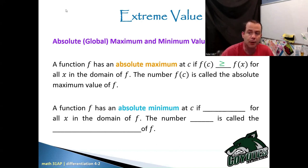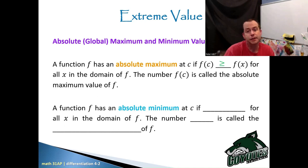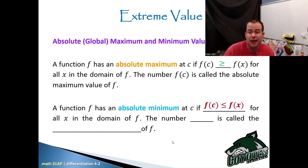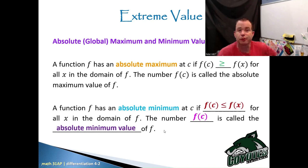Absolute or global maximum and minimum values — the word global is also interchangeable with absolute. The function F has an absolute maximum at C if F of C is larger than F of X for all X in the domain of F. If that output is the largest output of the entire function, then it's an absolute max. The number F of C is called the absolute maximum value of F. Similarly, F has an absolute minimum at C if F of C is less than or equal to F of X for all X in the domain of F.